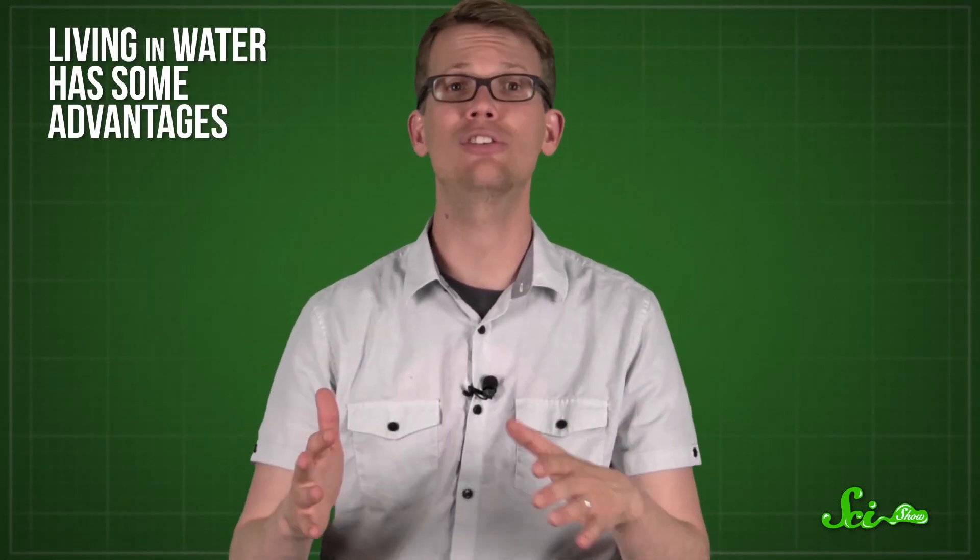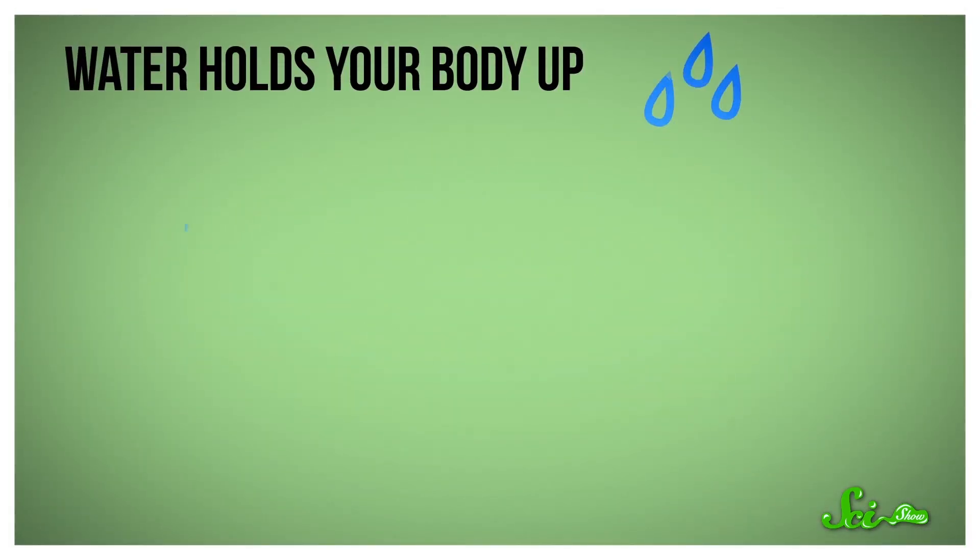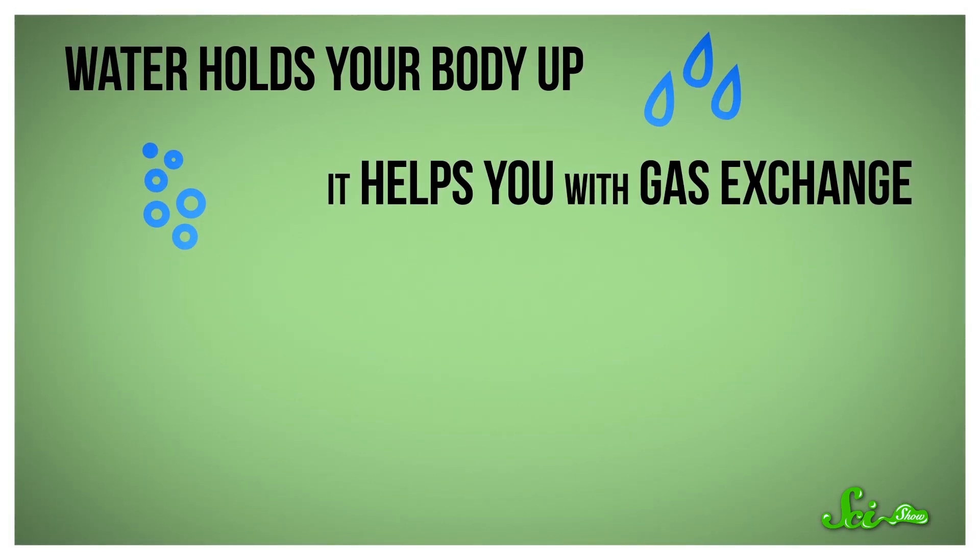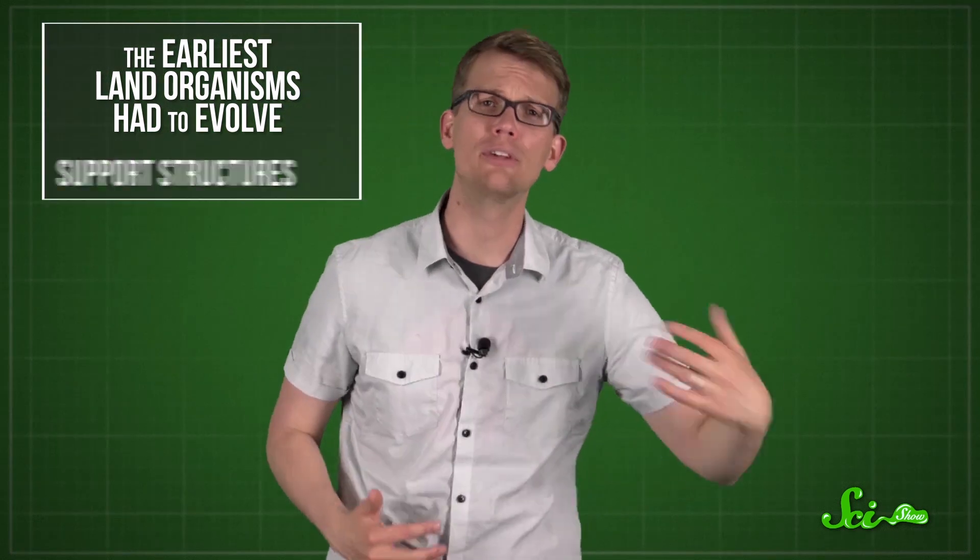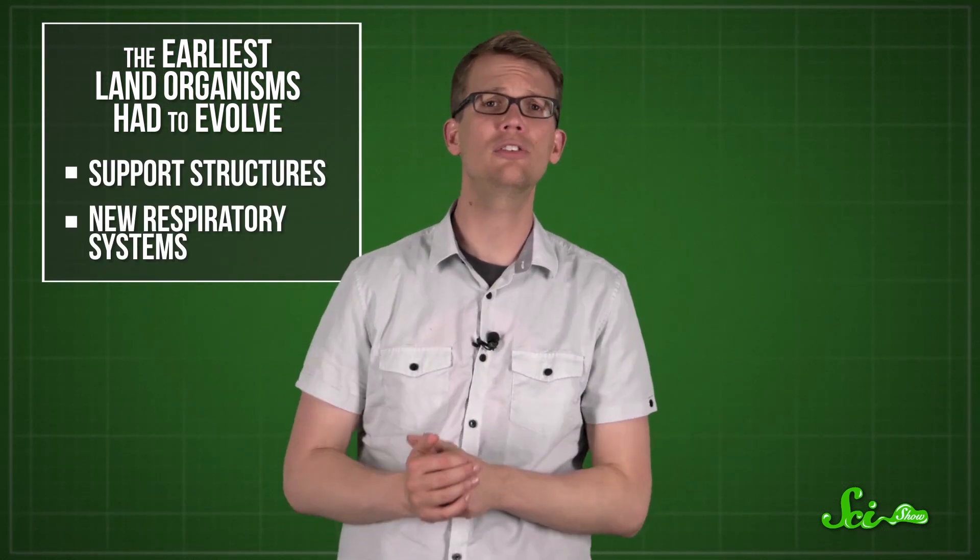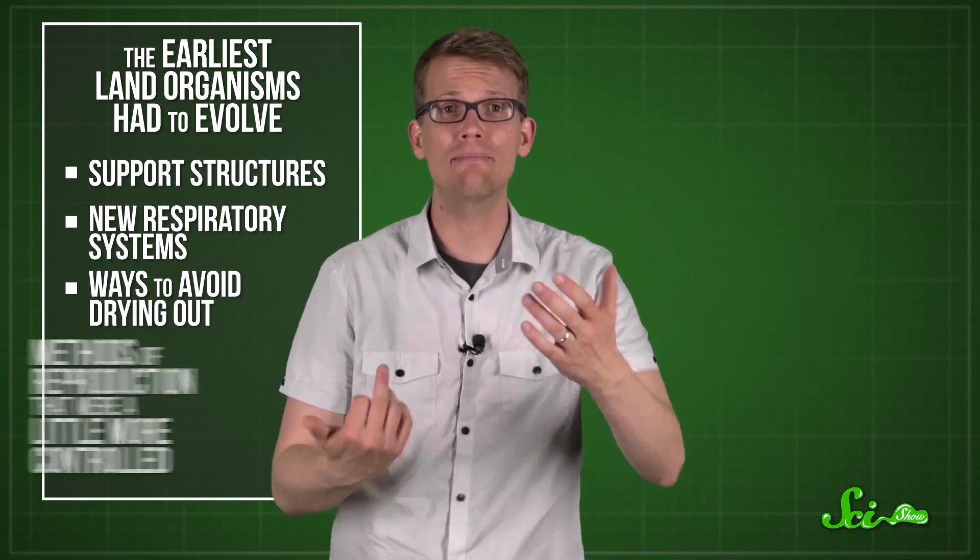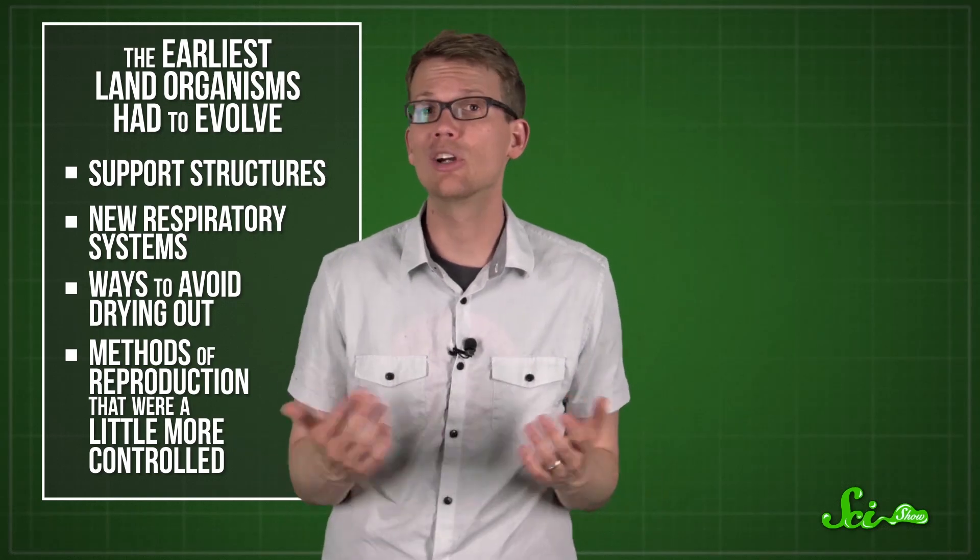and living in water had some advantages over living in air. Water holds your body up. It helps you with gas exchange. If you release your sperm or eggs into the Big Blue, it's much more likely that they will meet up with other gametes to reproduce. None of that is true for air. You have to lift your body up, and in order to make the next generation, you have to get physically close to each other. So the earliest land organisms had to evolve support structures, new respiratory systems, ways to avoid drying out, and methods of reproduction that were a little more controlled.